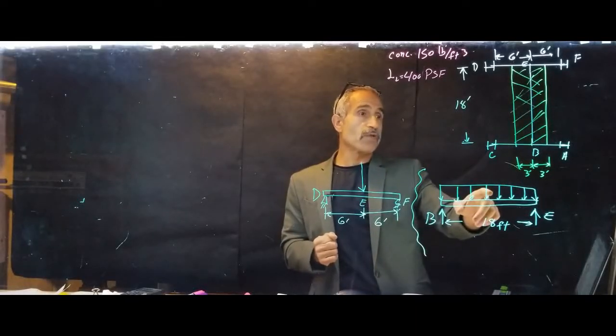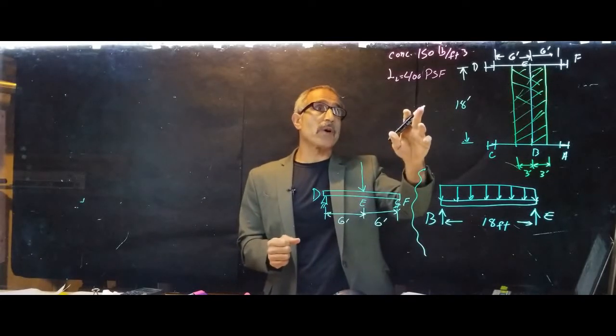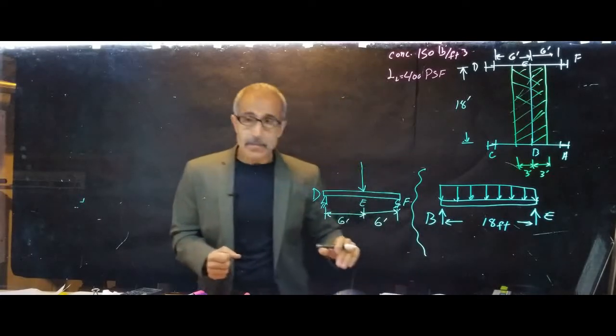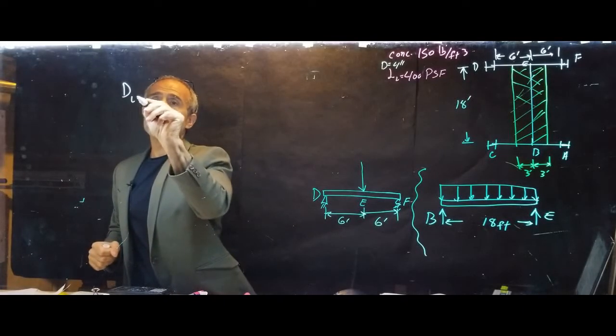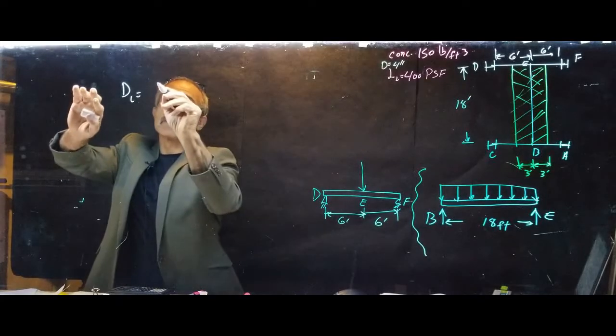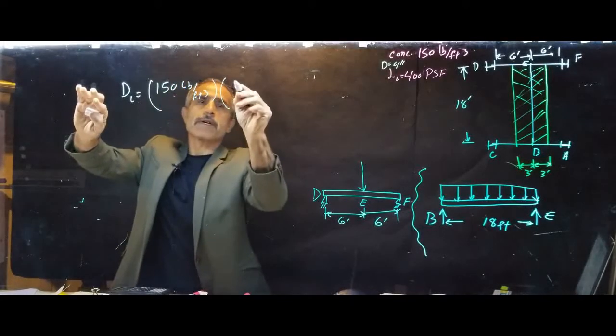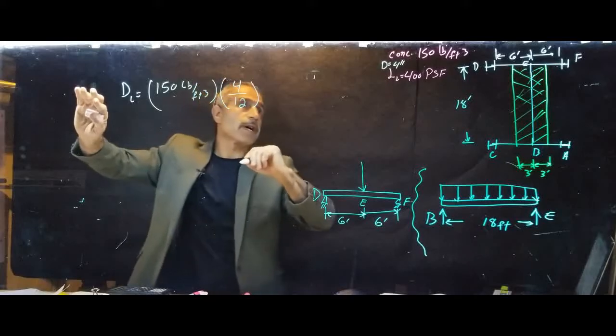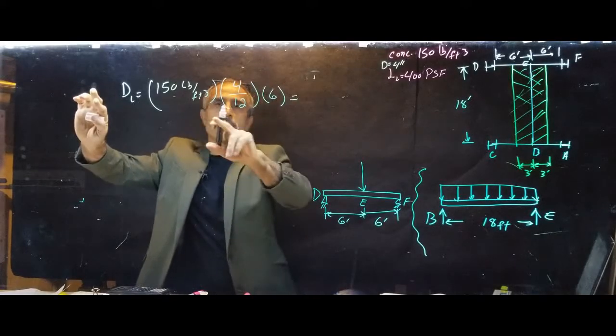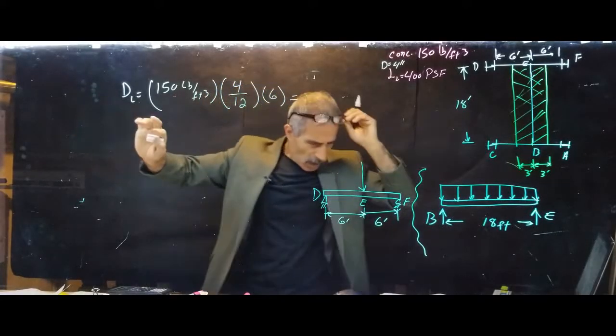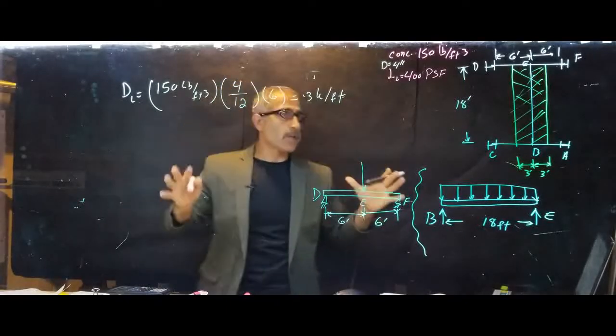Now we have that, we can go ahead and calculate the weight on this beam. We can calculate this uniform load. So let's go ahead and do that. The concrete is 150 pounds per cubic feet. So we're going to calculate the dead load. The dead load for the slab is 150 pounds per cubic feet, and it's 4 inches thick. Make that to a foot, and then it's six feet wide. Let's convert this to kips, and it comes out to 0.3 kips per foot.